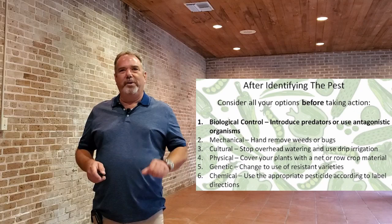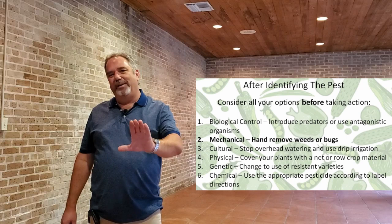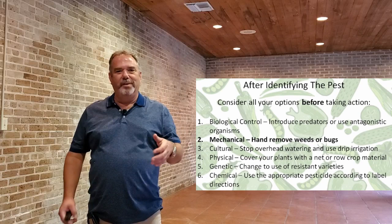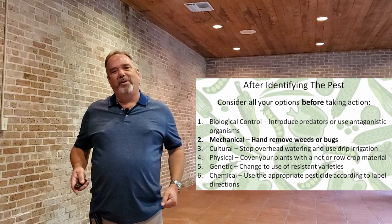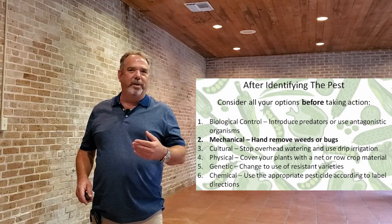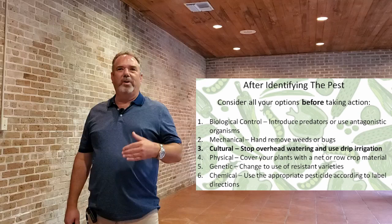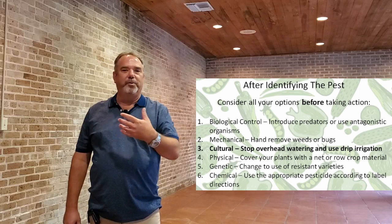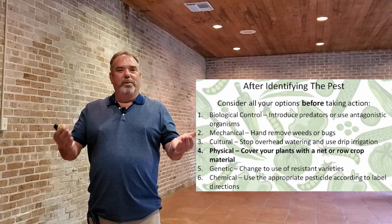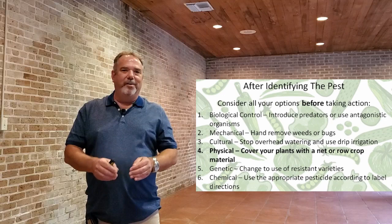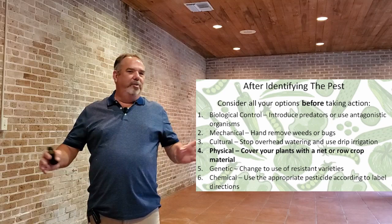Mechanical control is really good, especially if you're out in your garden every day. If you see one or two bugs, take them off — wear your gloves, have a cup with soapy water and just drop them in. Sometimes if you shake the plant, bugs fall off and have a hard time getting back on. Cultural practices include stopping overhead watering and using drip irrigation to reduce disease pressure. Physical controls include covering your plants with netting — if you keep insects out, they can never lay eggs that develop into caterpillars that eat the plant.